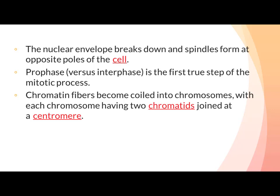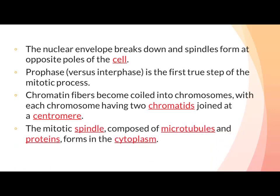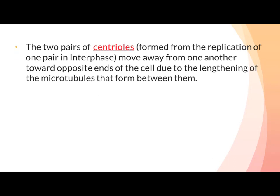ہر ایک chromosome میں دو chromatids ہوتے ہیں جو ایک central spherical point کے ذریعے attach ہوتے ہیں جسے centromere کہتے ہیں۔ The mitotic spindle composed of microtubules and proteins forms in the cytoplasm۔ Mitotic spindle microtubules اور proteins پر مشتمل ہوتا ہے۔ The two pairs of centrioles move away from one another toward opposite ends of the cell due to the lengthening of microtubules that form between them.